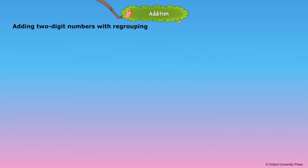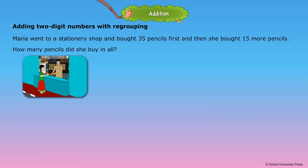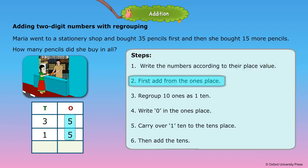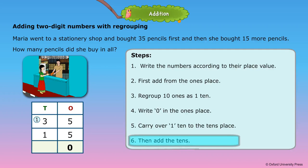Adding 2-digit numbers with regrouping. Maria went to a stationary shop and bought 35 pencils first, and then she bought 15 more pencils. How many pencils did she buy in all? Steps: 1. Write the numbers according to their place value. 2. First add from the ones place. 3. Regroup 10 ones as 1 ten. 4. Write 0 in the ones place. 5. Carry over 1 ten to the 10s place. 6. Then add the tens. Maria bought 50 pencils in all.